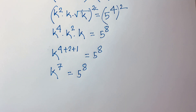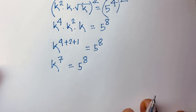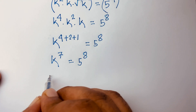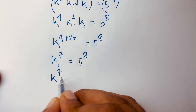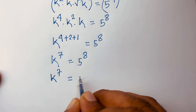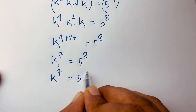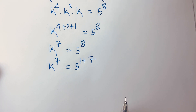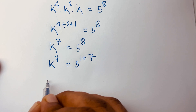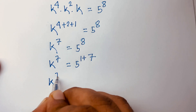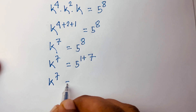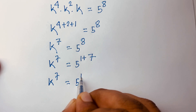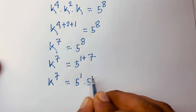Now k to the power 7 is equal to 5 to the power 1 plus 7, because 1 plus 7 = 8. So k to the power 7 is equal to 5 to the power 1 times 5 to the power 7.